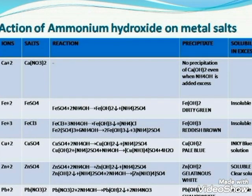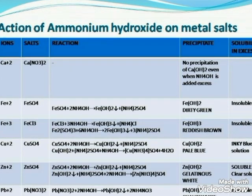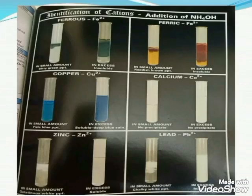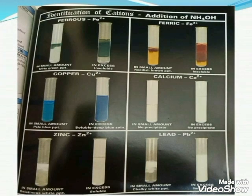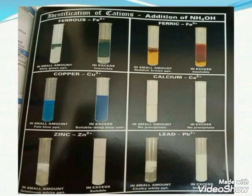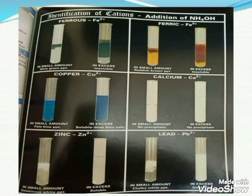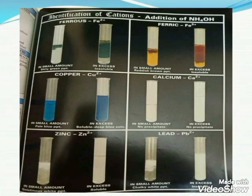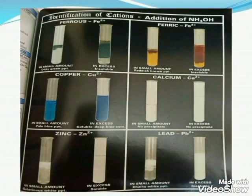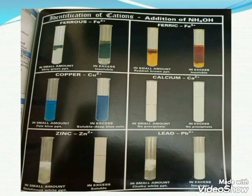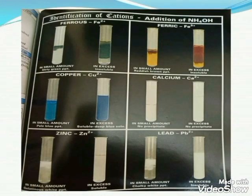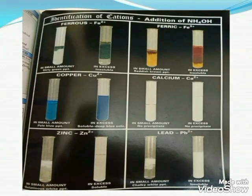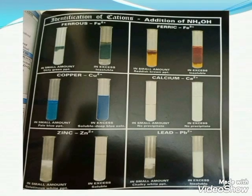This interesting slide from the textbook Dalal shows the color of the various salt solutions, or the precipitates formed when salt solutions react with different compounds. Fe²⁺ forms a dirty green precipitate in small amounts and is insoluble in excess. Fe³⁺ forms a reddish brown precipitate, also insoluble in excess. For copper there is a deep blue solution in excess. Very importantly, there is no precipitate in the case of calcium — calcium is quite different when reacted with sodium hydroxide and ammonium hydroxide. Zinc forms a gelatinous white precipitate in small amounts but is soluble in excess. Lead gives a chalky white precipitate that remains insoluble in excess.